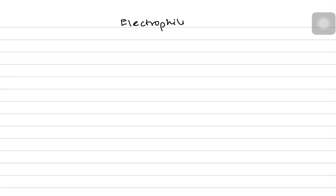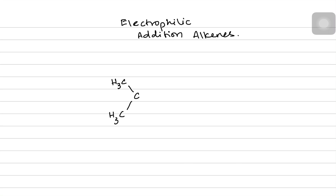In today's video we'll do the electrophilic addition reactions generally for other compounds. So we'll be talking about electrophilic additions of alkenes but using various reactants. Let's start with an alkene which is very clearly asymmetrical — I'd recommend you think about the name of this alkene.